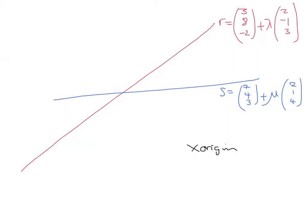I want to find out where these two lines intersect, or indeed whether they intersect. The way I've drawn it, it looks like they intersect, right? But they might not.